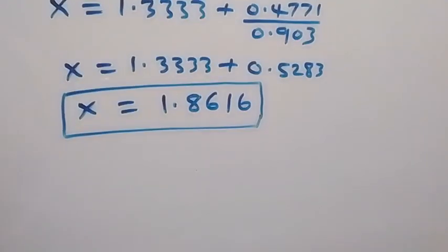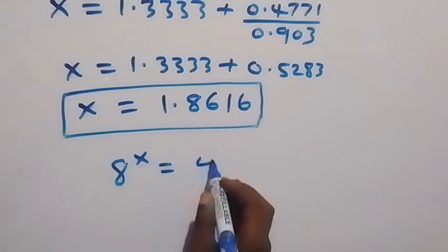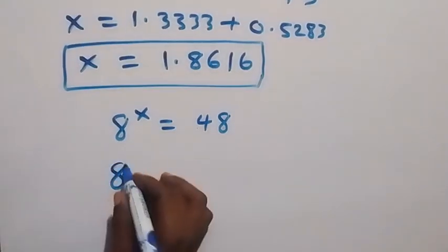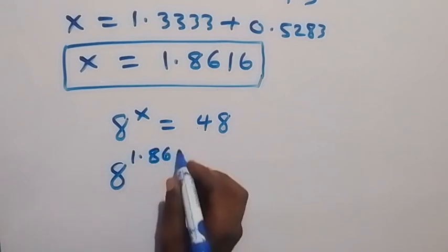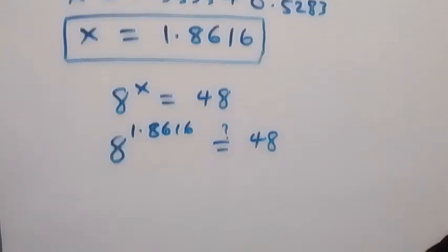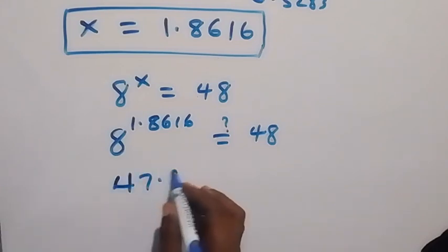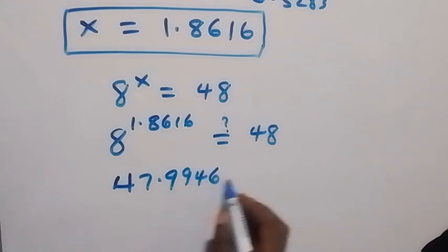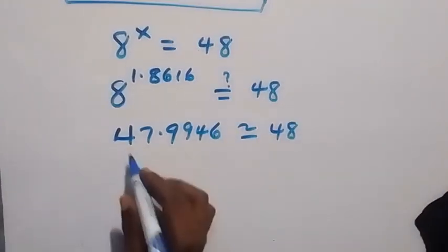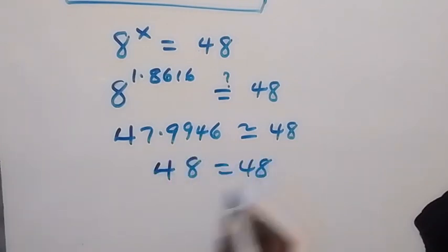To check: from our original equation 8 raised to power x equals 48, when we put in the value of x we have 8 raised to power 1.8616. Computing this gives us 47.9946 to 4 decimal places, which is approximately equal to 48, confirming our answer.